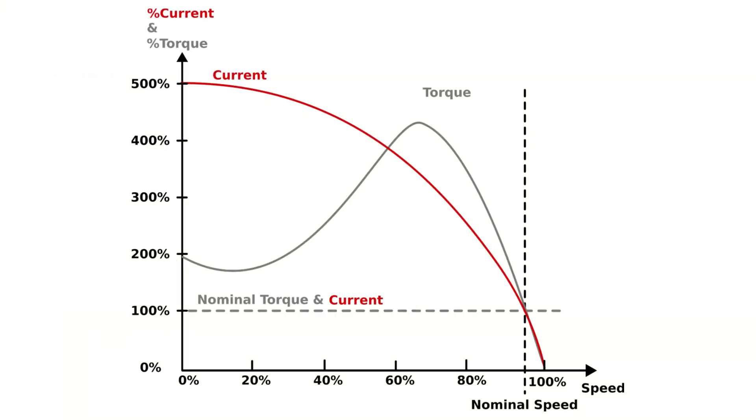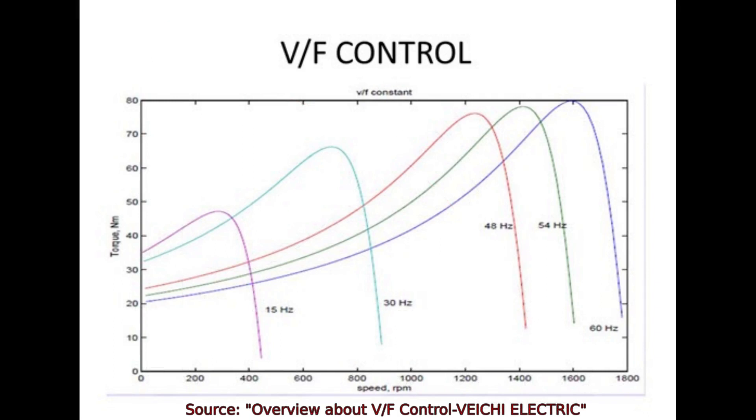There are times when the current may be higher, for example at startup, when the slip speed is largest. But that high current is only transient, and is also mitigated by the VFD, because I can start the motor with a slower frequency than the rated frequency, so the slip speed won't be as big initially. I'll leave a link in the description that goes over this point in detail.